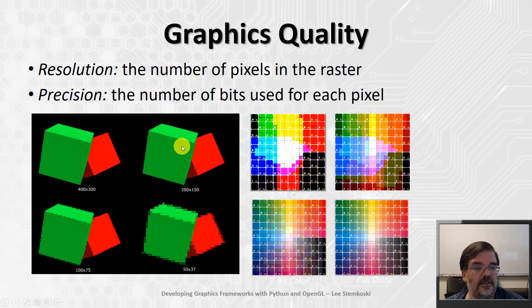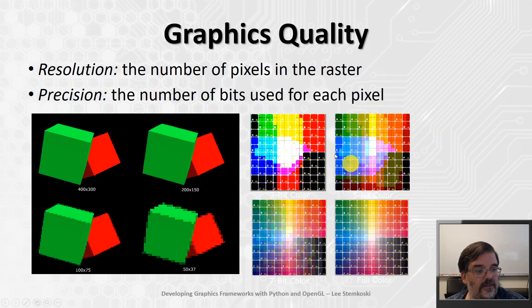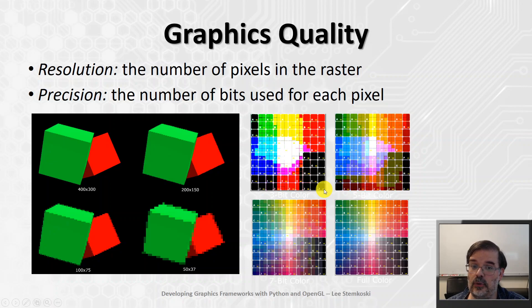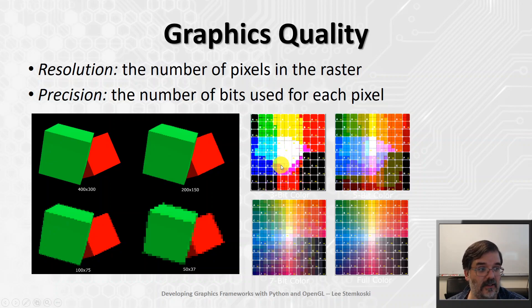The sequence of four images of two cubes shows that as the resolution is lowered, the image appears more pixelated. On the right, a color image is rendered with different bit depths. For example, the top-left image is rendered using 3-bit color, which means 2 to the 3, or 8 different colors — white, black, red, green, blue, cyan, yellow, and magenta. To the right of that is a 5-bit color image, then a 7-bit color image, and then the image in full color.